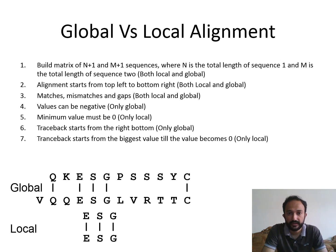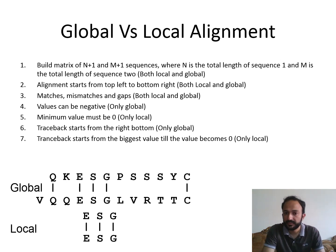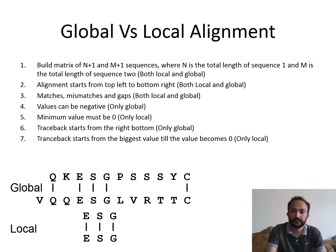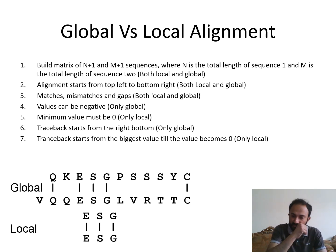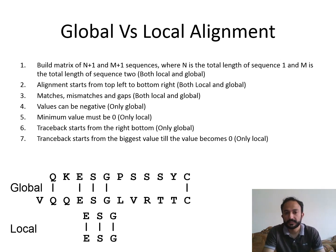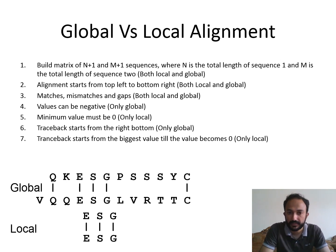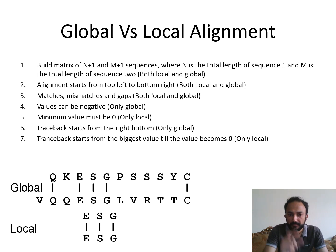If the length of m is seven, then we will make the matrix cells seven plus one, that is eight. The next point: alignment starts from the top left to the right bottom. This is common between both local and global alignment — we start from the top left cell to the right bottom cell.